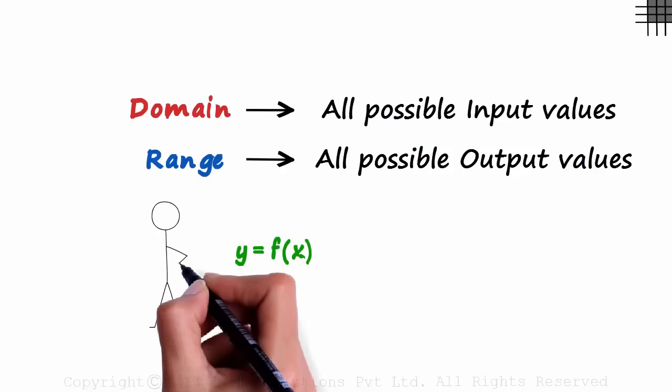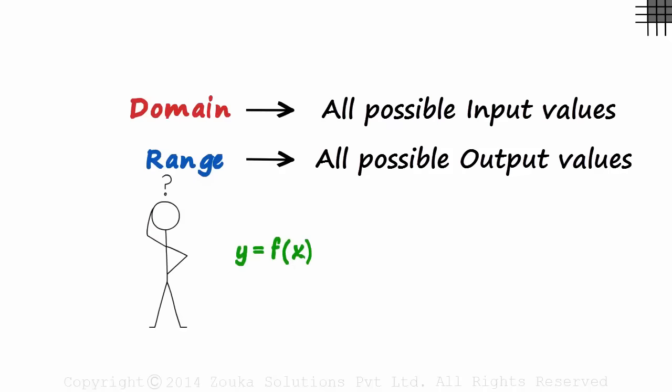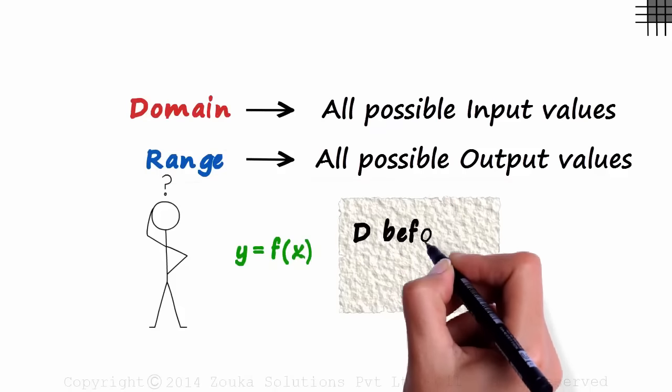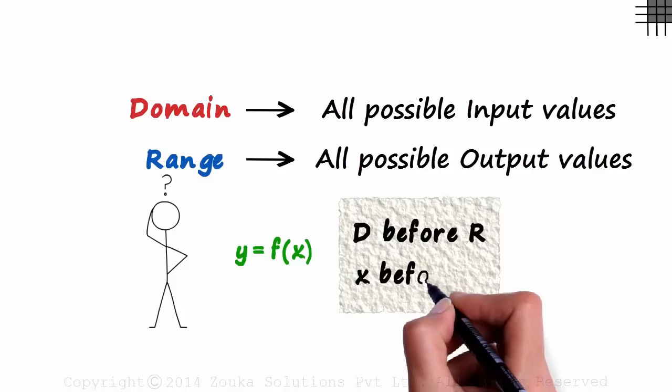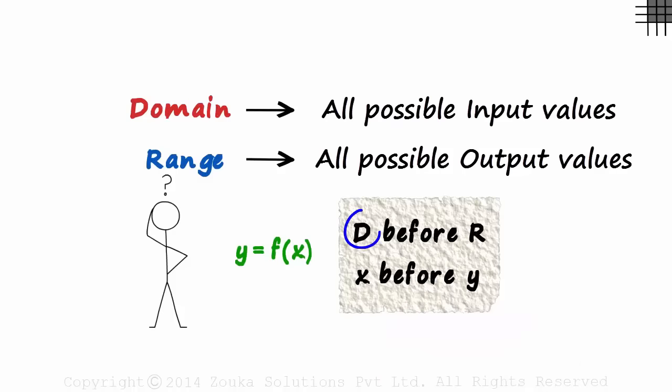Is there any good way to remember this? How do we remember that the domain is all possible input values and the range is all possible output values? Maybe something like d comes before r and x comes before y. Domain is x and the range is y. Okay, nice!